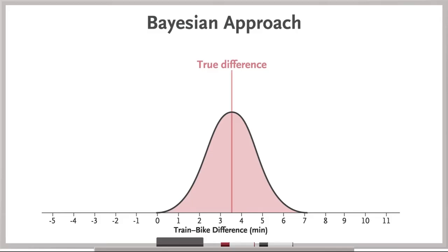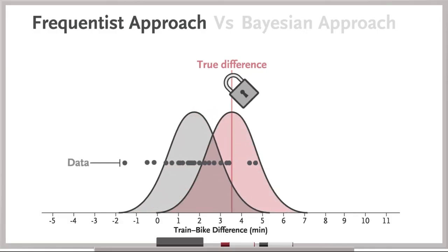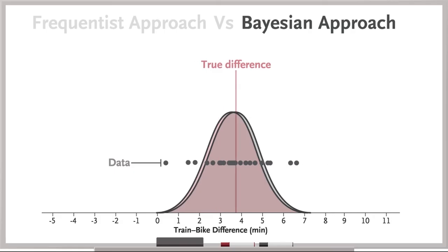The fundamental difference between frequentist and Bayesian approaches is that the frequentist approach treats the true difference as fixed, and the data as a random variable, while the Bayesian approach treats the true difference as a random variable, and the data as fixed.